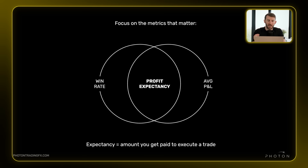This is why win rate on its own is irrelevant, and risk reward on its own is irrelevant. You need both combined to get your expectancy.